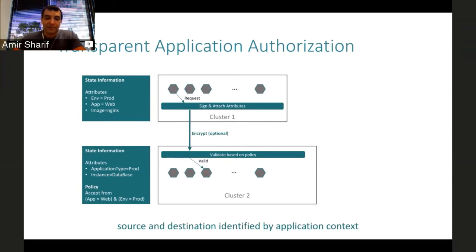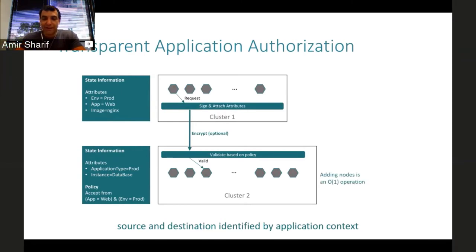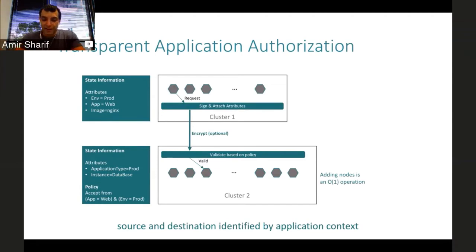A key difference: when you add additional instances, this is a linear operation — not a quadratic one. All we care about is the identity. We don't have to calculate all routes, exceptions, and firewall rules. So we are operating in O(1) or linear space.